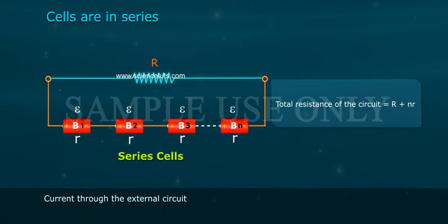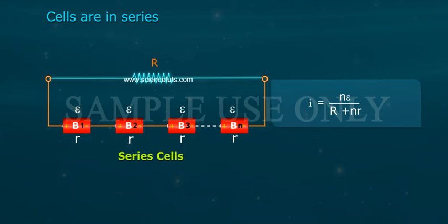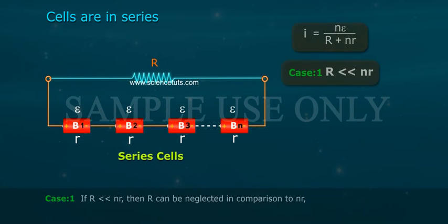Current through the external circuit: I equals total EMF by total resistance. I equals N epsilon by R plus N r. Case 1.